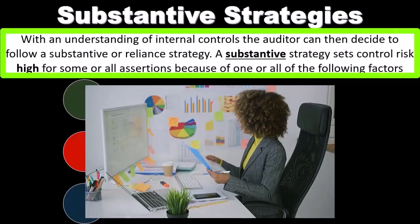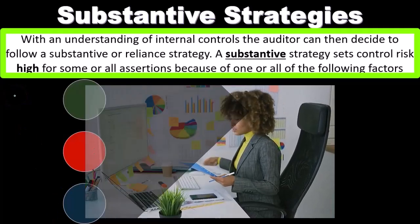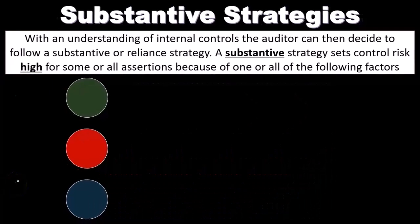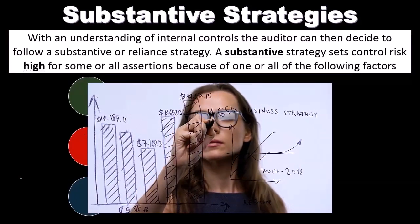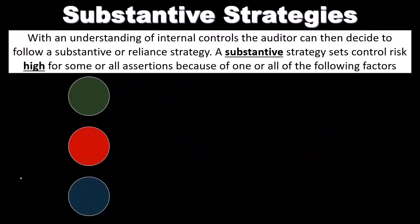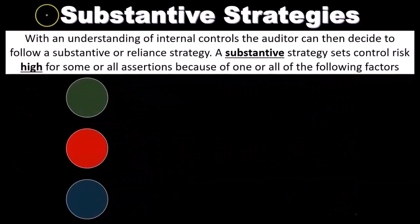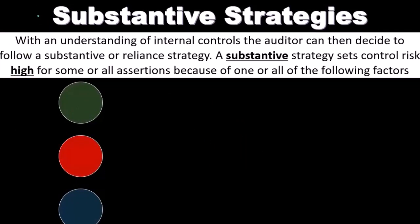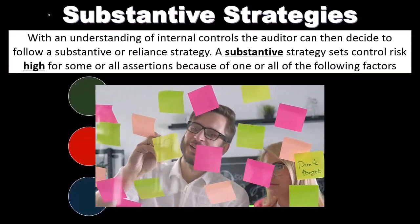If we're going to follow a substantive strategy, that means the strategy sets control risk high for some or all assertions. When thinking about substantive strategies, it's easy to get the concept but still mix up which way things are going — for example, whether control risk being high or low relates to substantive strategies. A substantive strategy is basically an in-line type of strategy, meaning we're relying on ground-level work — more of the grunt work, where we'll typically need a lot more of it.